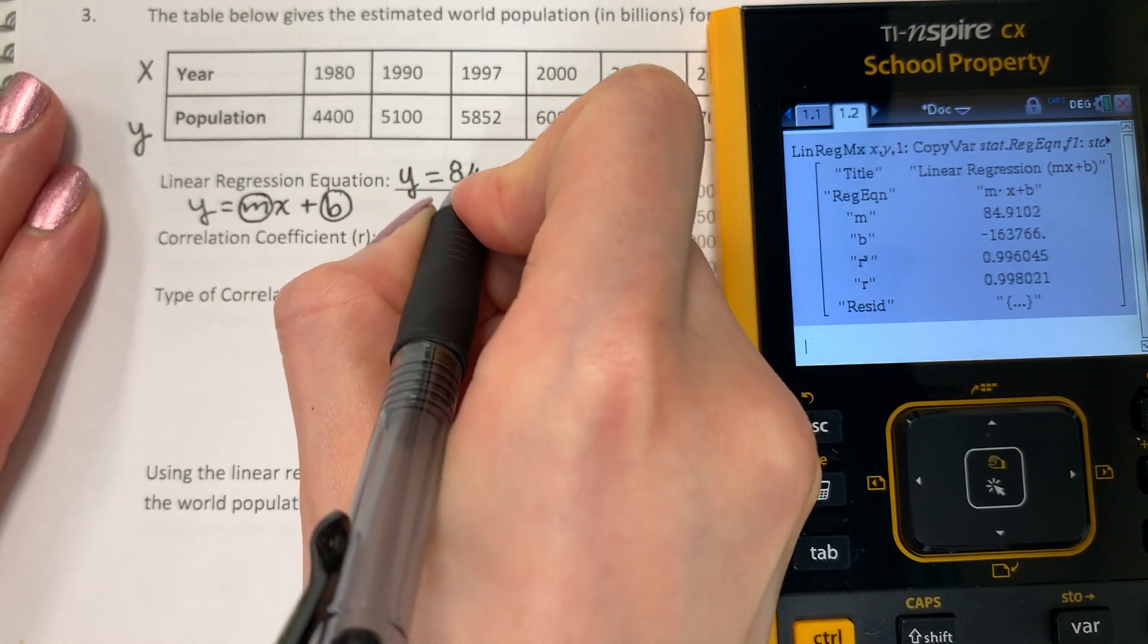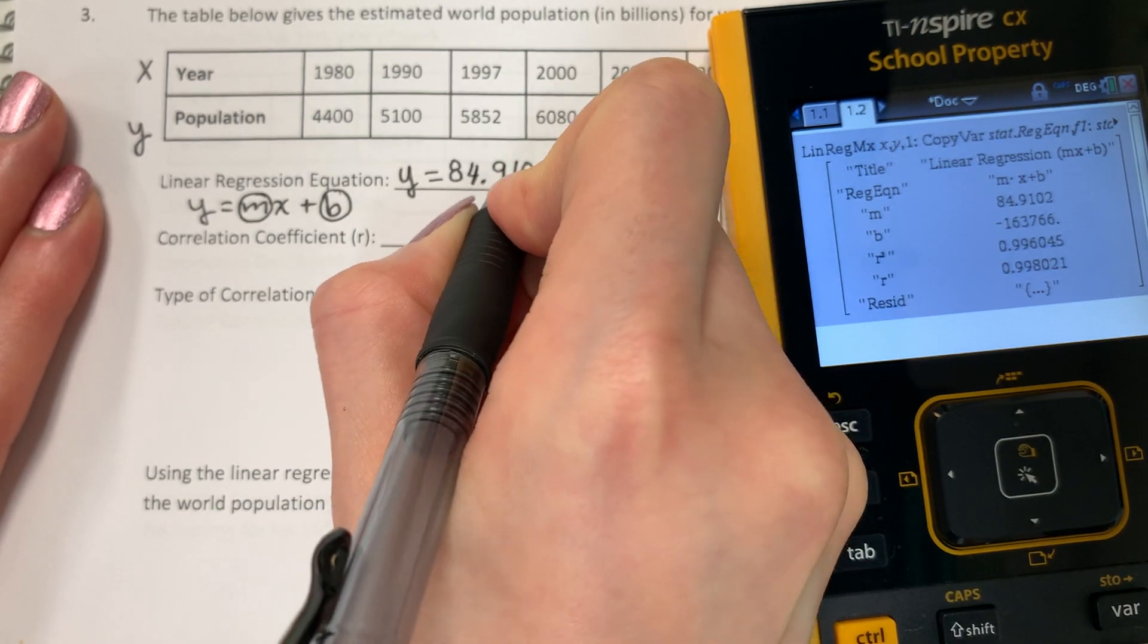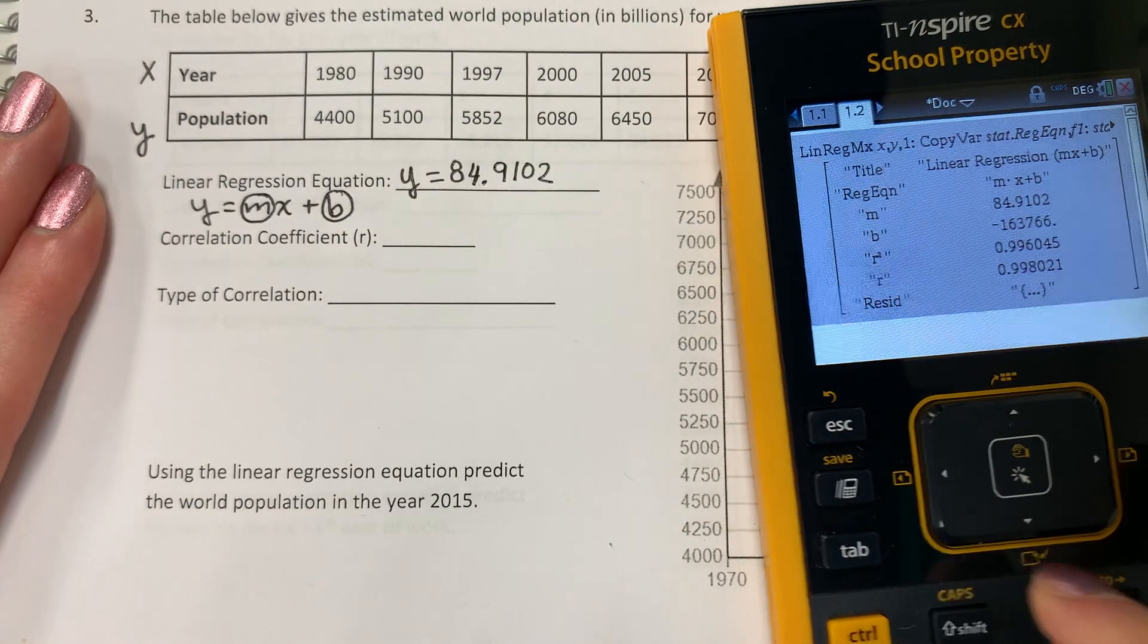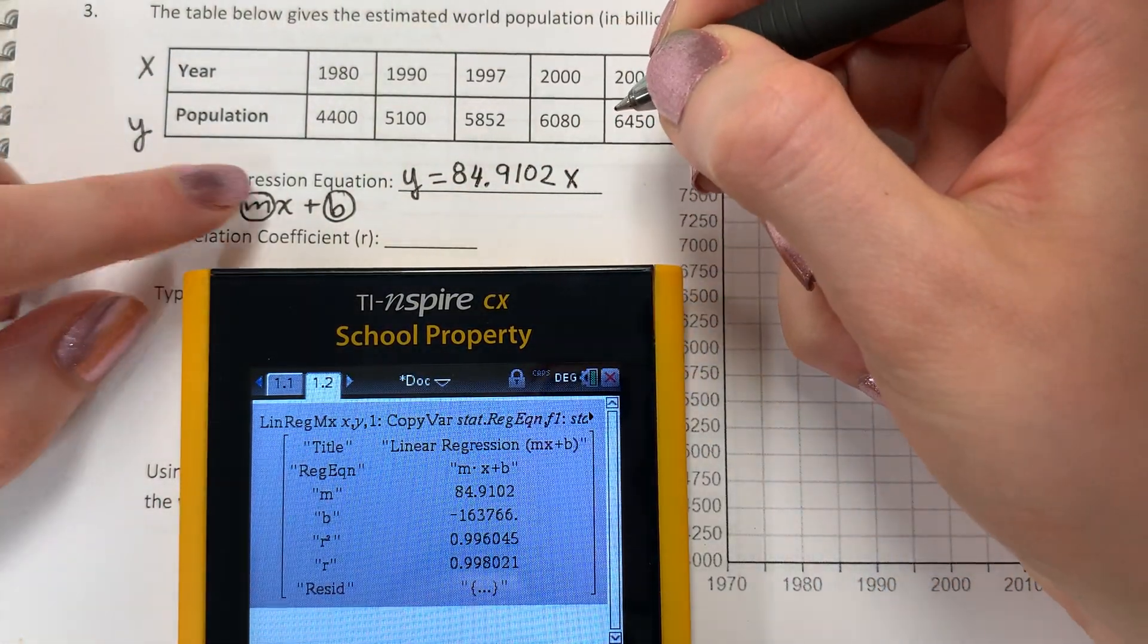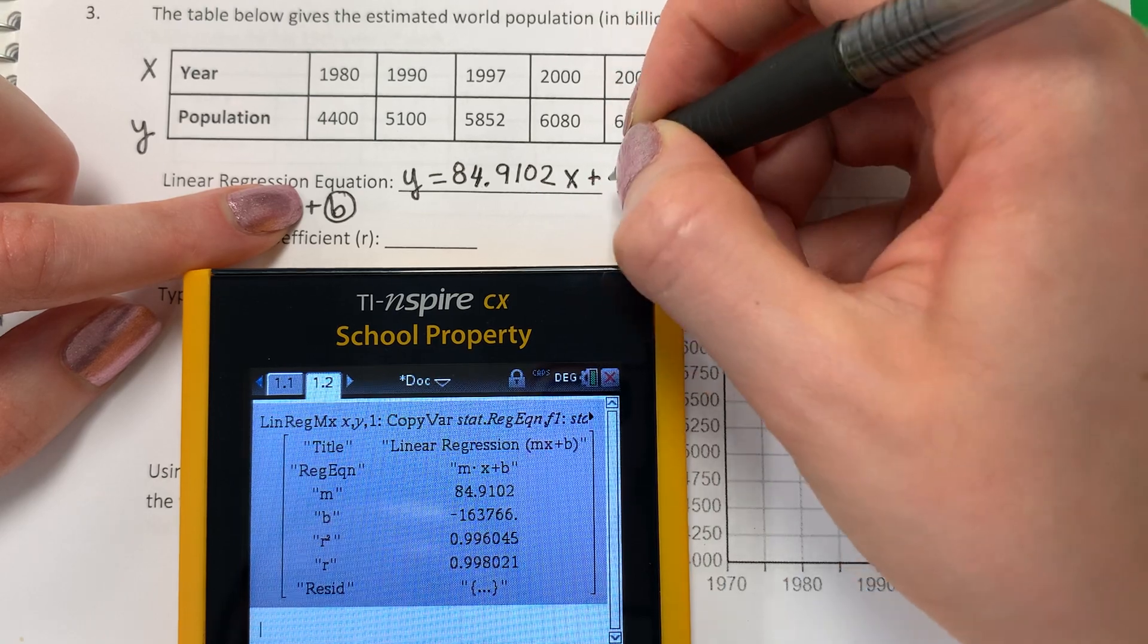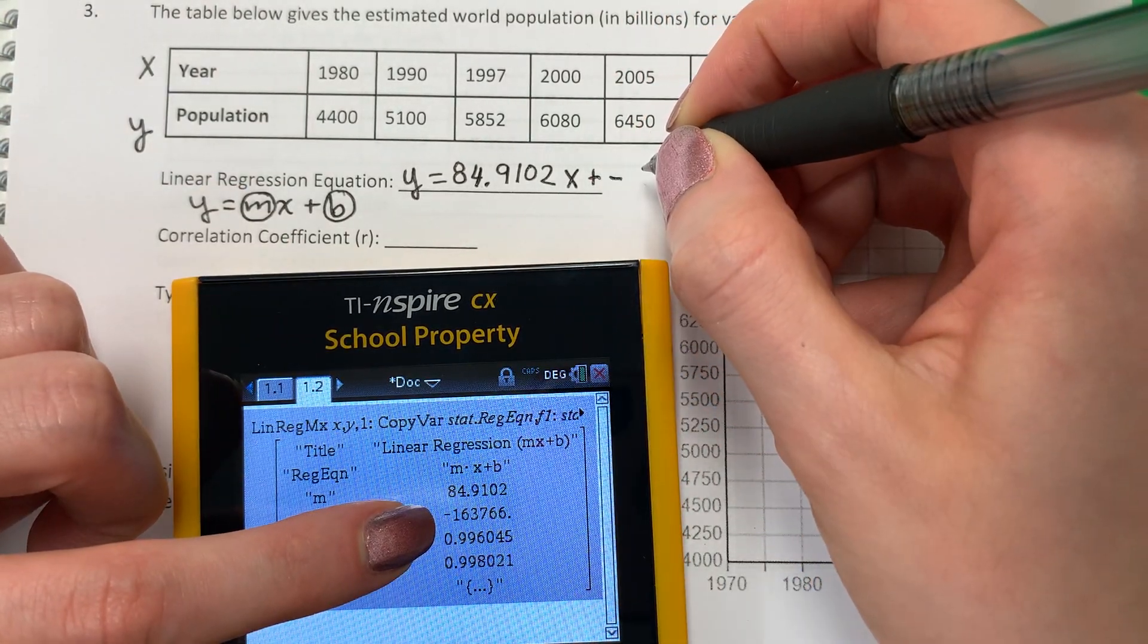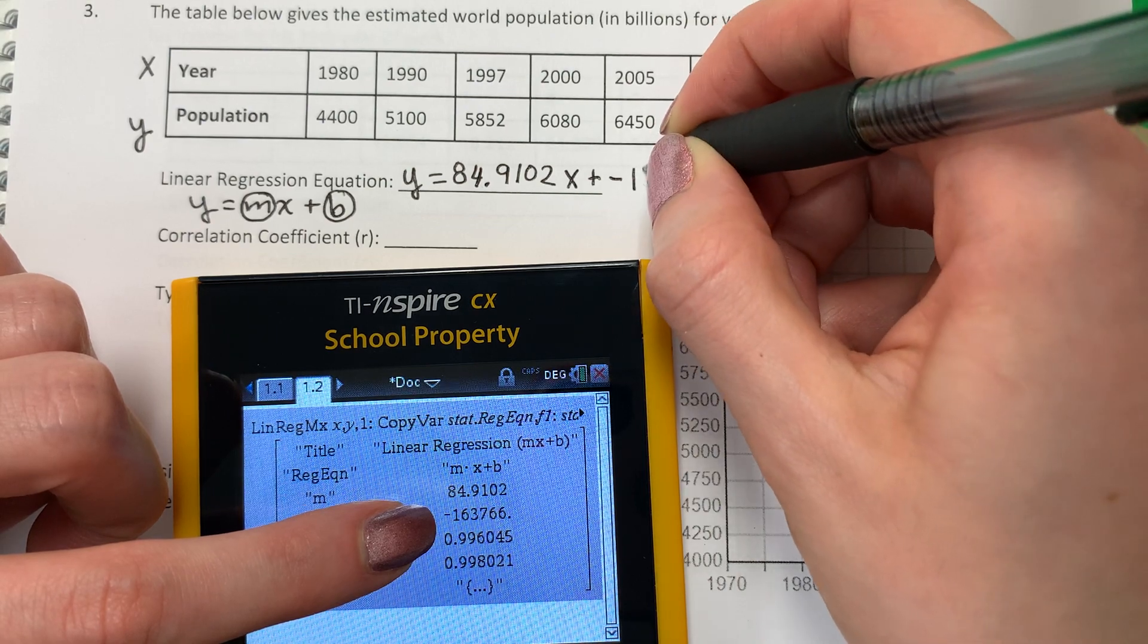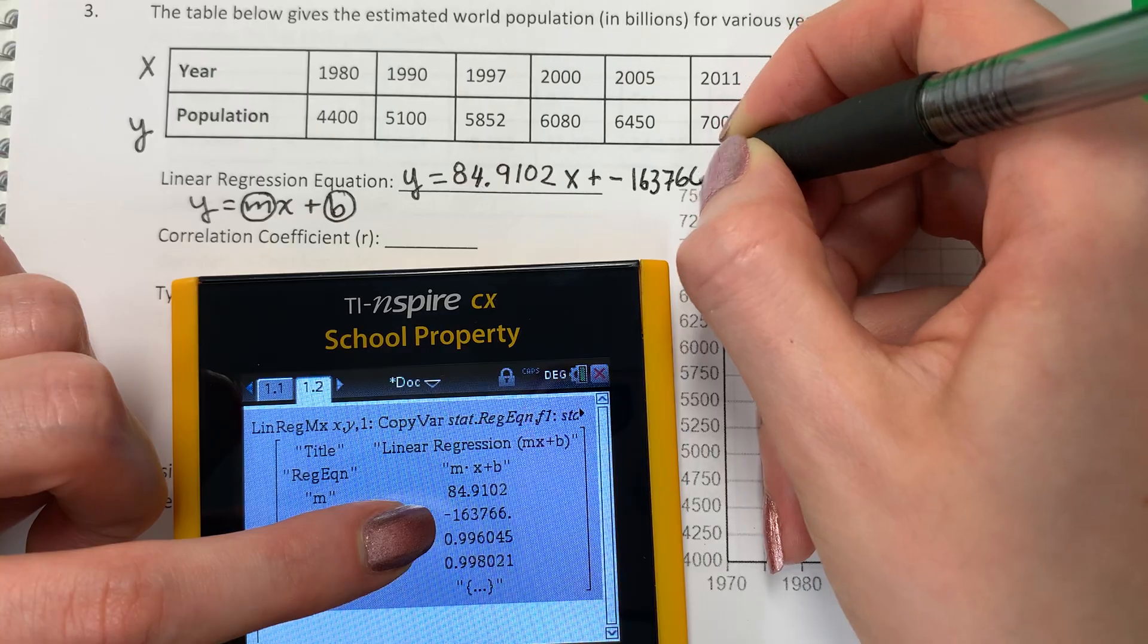84 point. I'm going to put all of it. Voy a poner todo. 9, 1, 0, 2. Put your X. And then the B is plus. B is negative. Let's see. 1, 6, 3, 7, 6, 6.